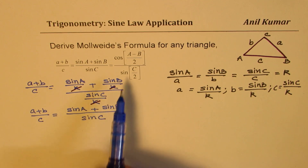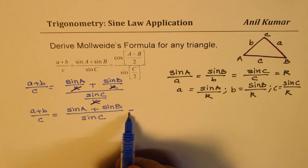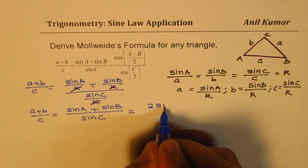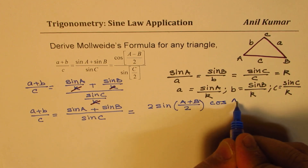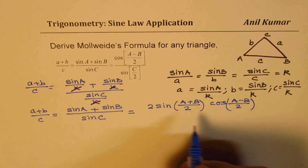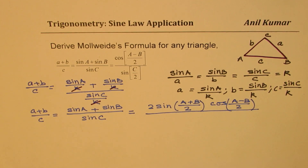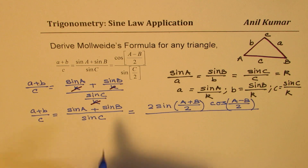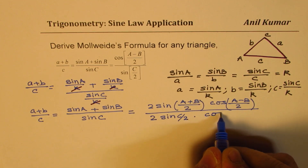Now from here we'll derive the formula. We have a sum of sines, so we'll convert it to product form. sin A + sin B can be written as 2 sin((A + B)/2) · cos((A − B)/2). For the denominator, sin C can be written using the double angle formula as 2 sin(C/2) · cos(C/2). Since we see sin(C/2) in the denominator, that's a good option.